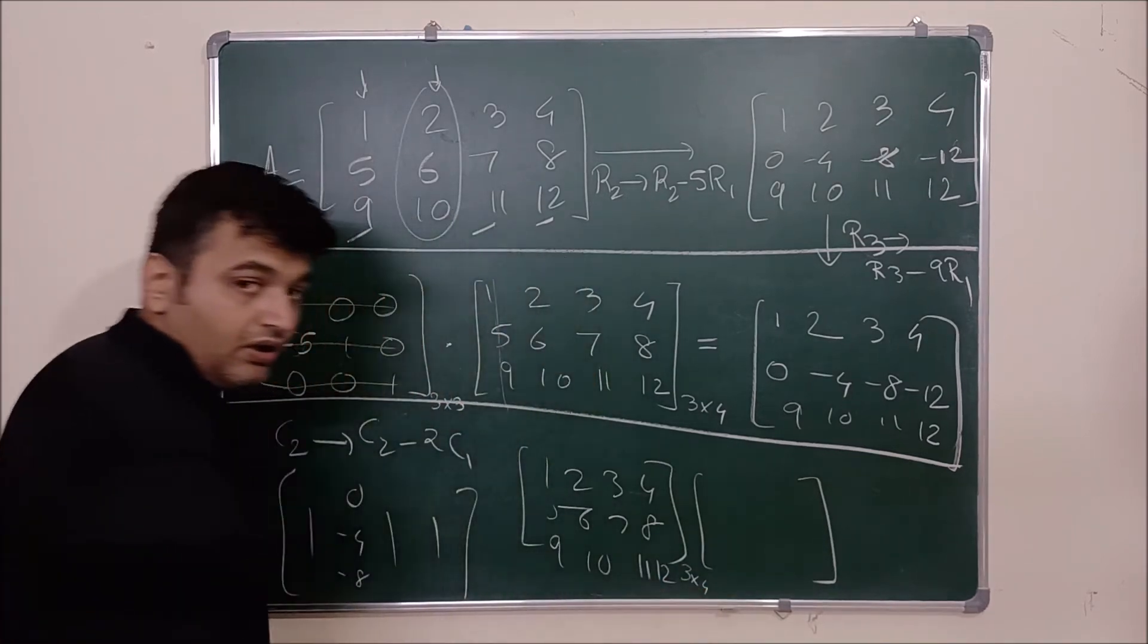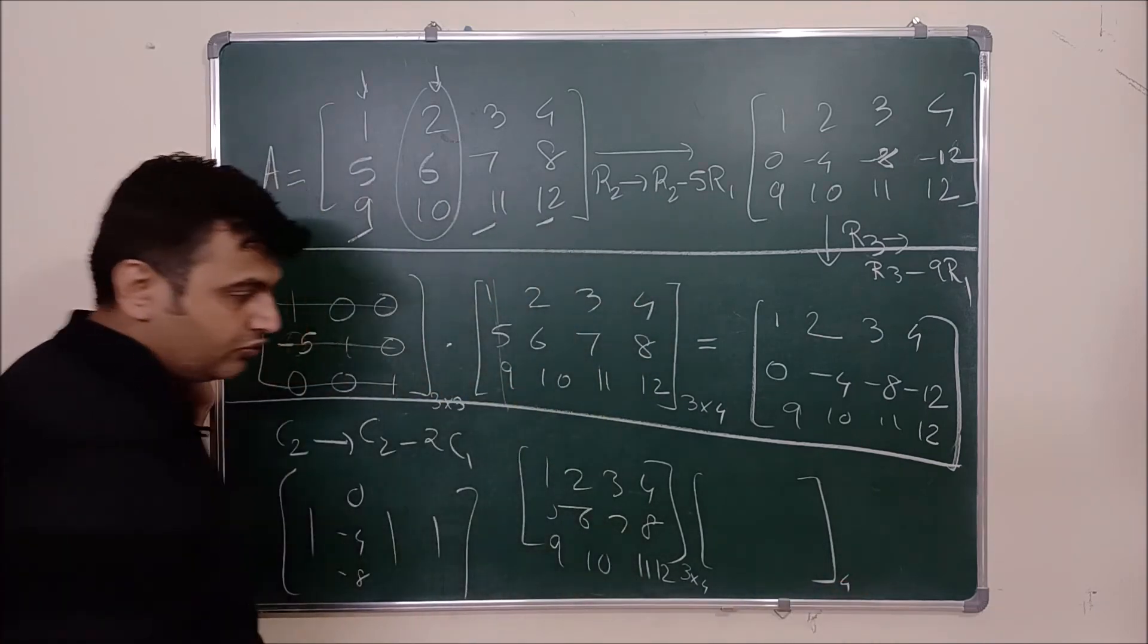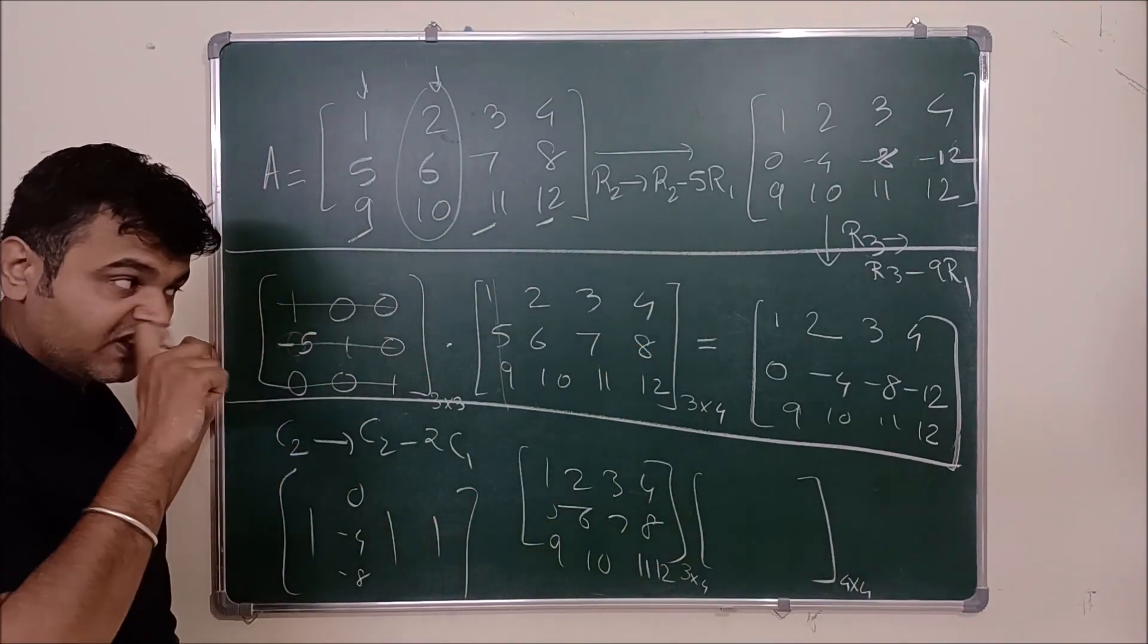The matrix is 3 cross 4. For multiplication to make sense here it should be 4. So you take a 4 cross 4 matrix square matrix.